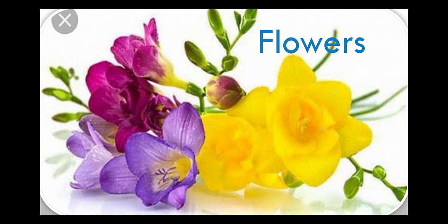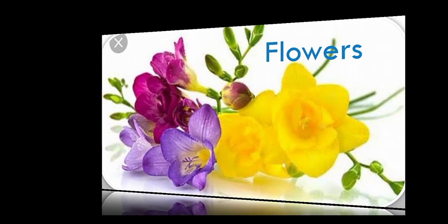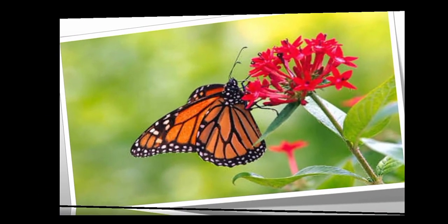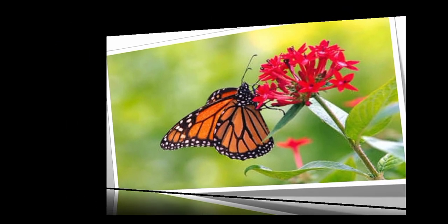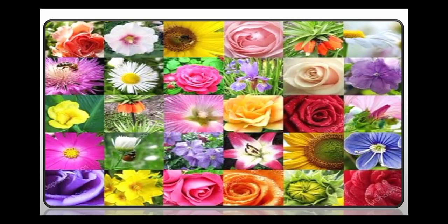A flower is a part of a plant. Flowers grow on trees or plants. Flowers are the most beautiful and colourful part of a plant. Flowers make fruits, and most fruits have seeds. Flowers can be of different size, shape, colour, and smell.